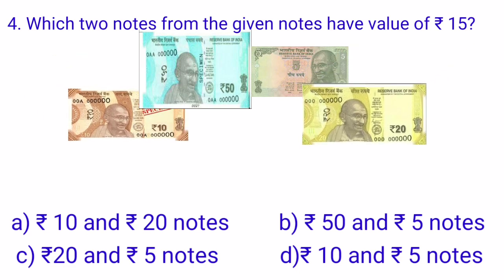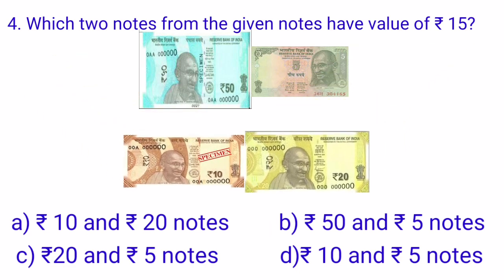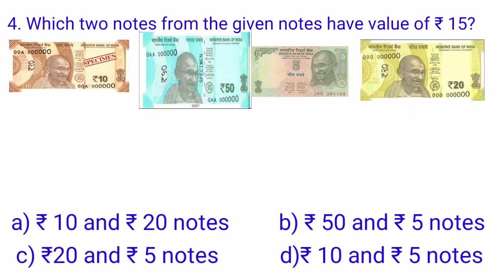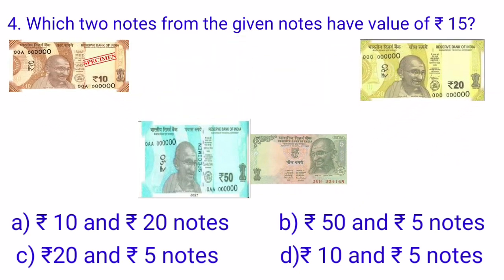In option A, Rs. 10 and Rs. 20 notes are added, giving us Rs. 30 — which is incorrect. In option B, Rs. 50 and Rs. 5 notes are added, giving us Rs. 55 — which is also incorrect.